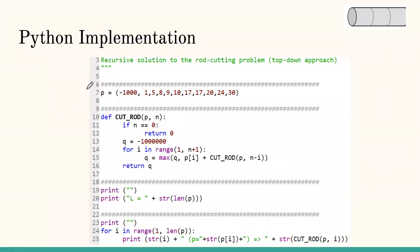The recursive rod-cut implementation closely mirrors the formal definition. We initialize the price table with length zero as a very large negative number, length one as one, two as five, and so on. The rod-cut algorithm takes the price table and length n, initializes Q to a large negative value, and loops from one to n. Let's trace this for n equals three.